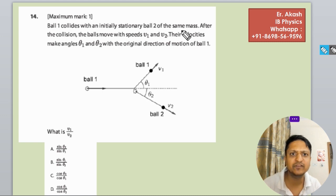initially stationary ball two of the same mass. After the collision the balls move with speeds v1 and v2. Their velocities make angles theta 1 and theta 2 with the original direction of motion of ball one.